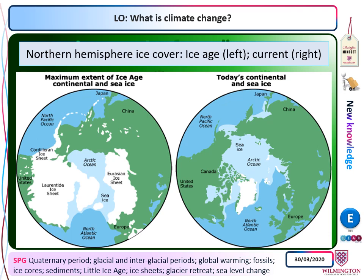This graphic shows the current land-based ice in white and sea ice in light blue. This is what we have now, compared to the last ice age when we had a lot more ice.